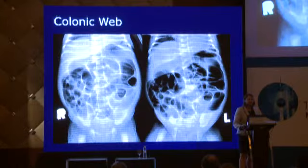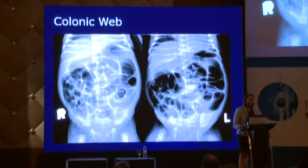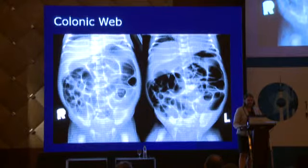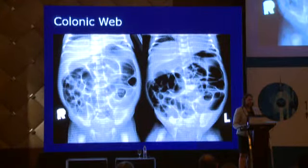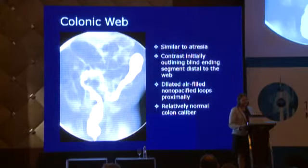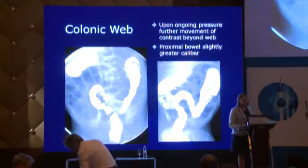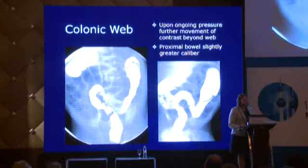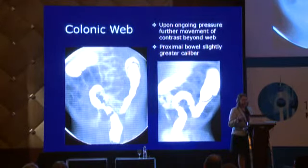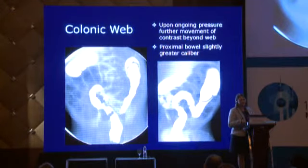Colonic web can have a delayed presentation since webs aren't always completely obstructing. The child may have issues passing meconium, infrequent stooling, and abdominal distension. Here the child has markedly distended, air-filled, featureless bowel loops converting to air-fluid levels on upright radiograph. A contrast enema was performed, outlining the web; with retrograde pressure the web is directed upward, and once more contrast passes through, the natural flow shows the web is mobile — now directed inferiorly.